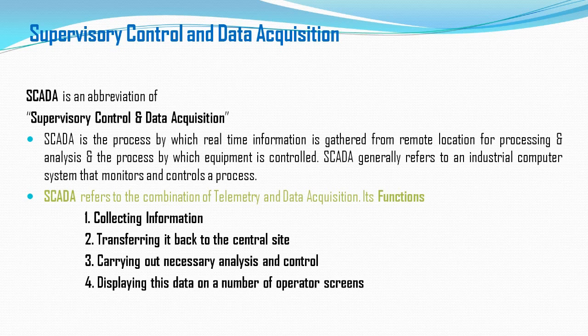SCADA first collects information from different process parameters such as temperature, level, and flow that are part of any process. It then transfers that data back to the central site. It carries out necessary analysis and control — when information is received, the system analyzes it and, where required, performs control actions based on the information received from the field.